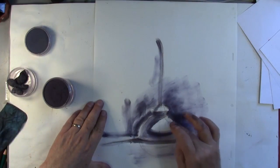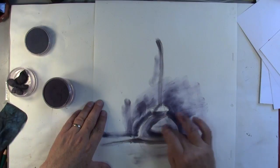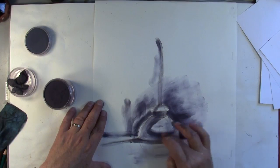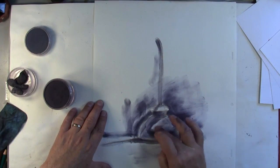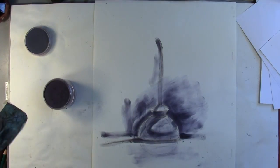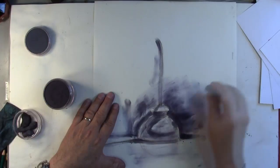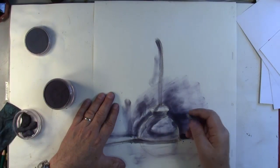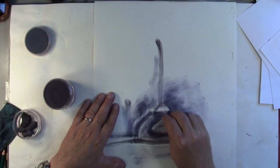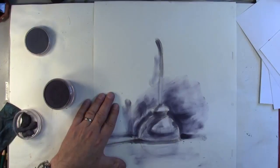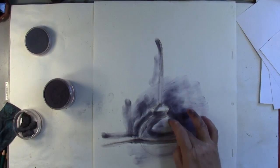We can put a little half tones in. Grab our kneaded eraser here. Pull out our highlight, which is gonna be right where the sun is shining here. And there's your oil can.